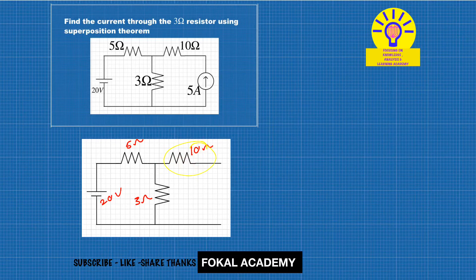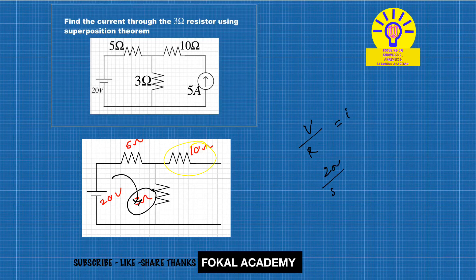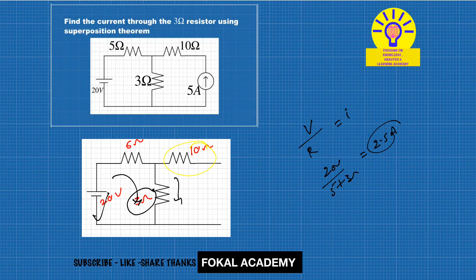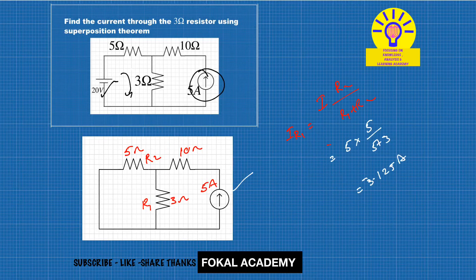Current now flows only through the 5-ohm and 3-ohm resistors, which form a series loop. The current flowing in the 3-ohm resistor equals total voltage divided by total resistance: 20 volts divided by (5 + 3) ohms, which equals 2.5 amperes. According to the superposition theorem, the total resultant current in the 3-ohm resistor is the sum of all individual currents: 2.5 amperes plus 3.125 amperes.